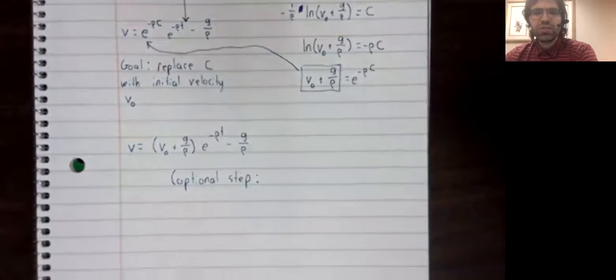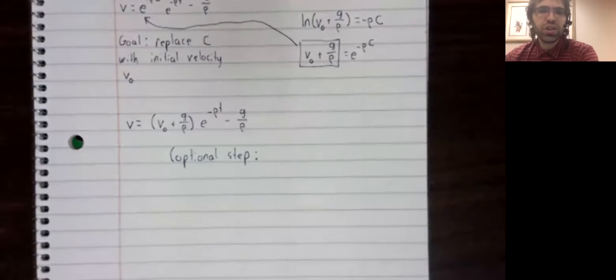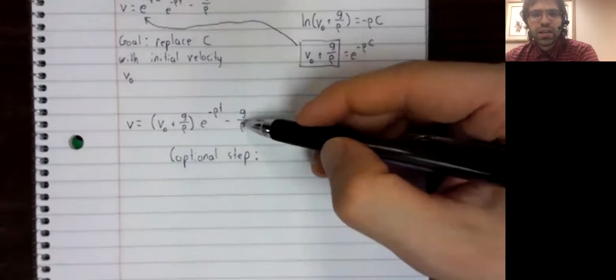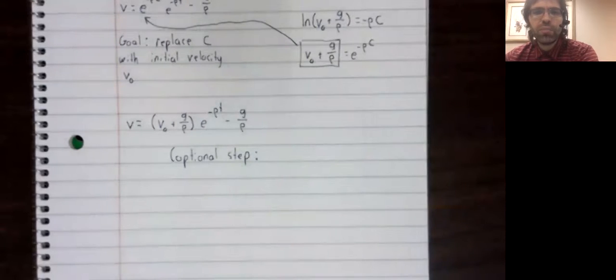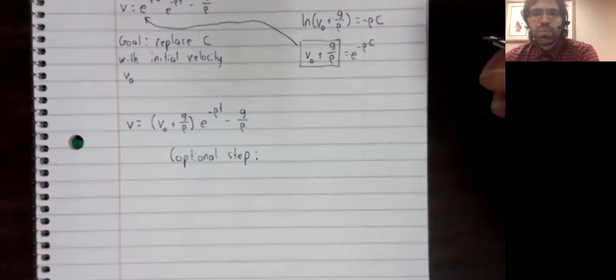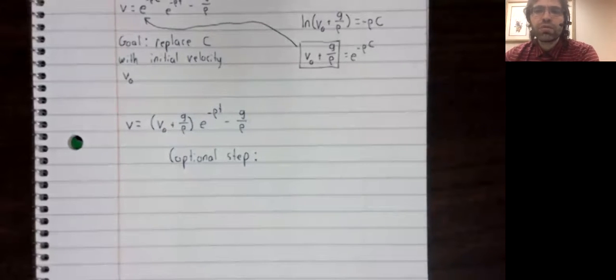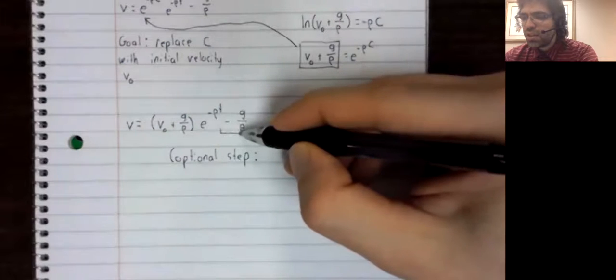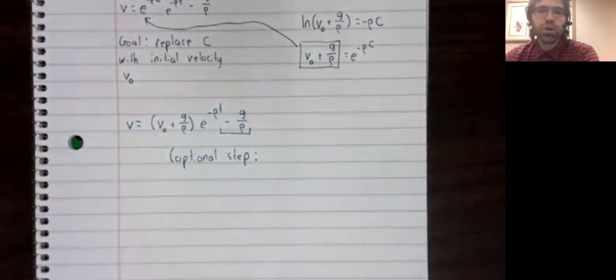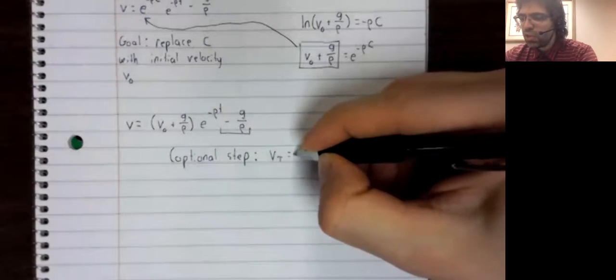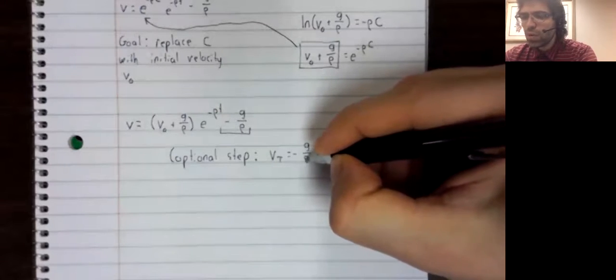Sometimes, not always, textbooks and other resources will rewrite this equation further. They'll say this g divided by rho looks familiar. If you think back to when we analyzed this by looking at where the derivative is positive and where the derivative is negative, negative g over rho was terminal velocity. V sub tau equals negative g over rho.